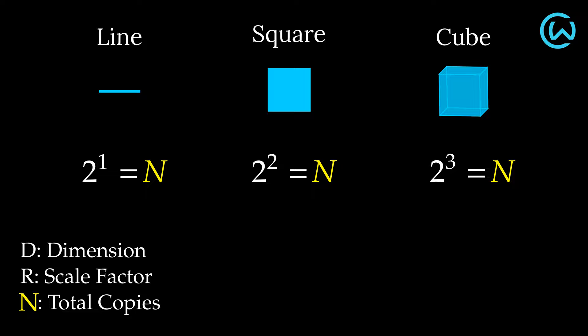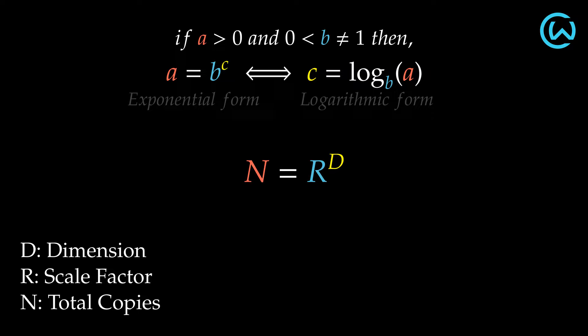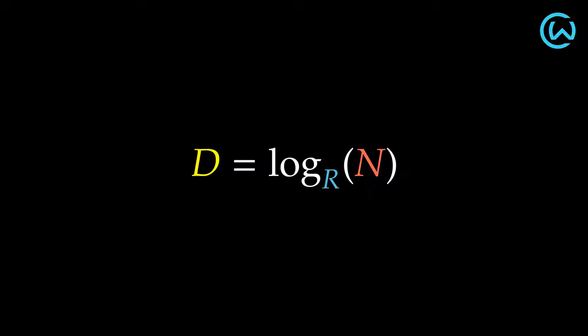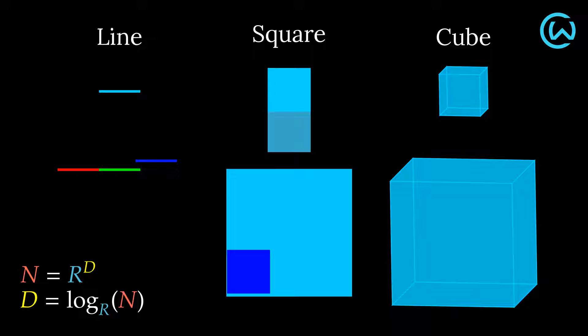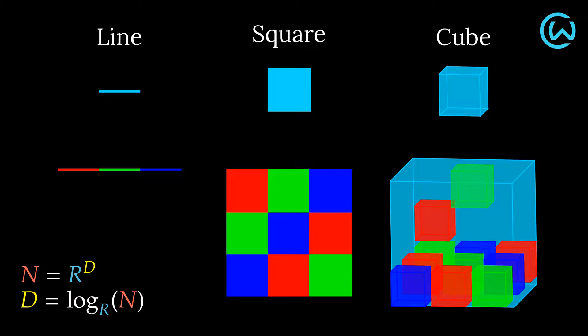From this relation, let's make out an equation to define the solution for dimension. Similarly, when scaled by a factor of 3, we get 3 unscaled copies of the line, 9 unscaled copies of the square, and 27 unscaled copies of the cube.